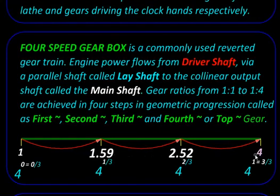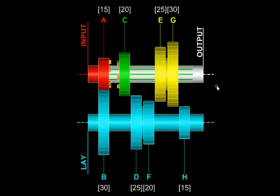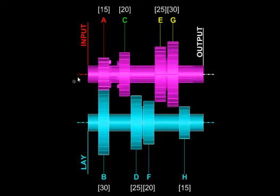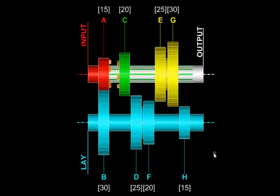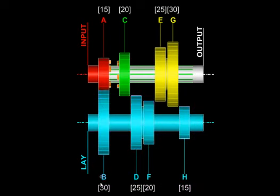Now let us see how to incorporate this geometric progression into a gearbox. To understand the idea behind this design, imagine a step pulley with four steps — say 15, 20, 25, and 30 — and another step pulley with decreasing steps — 30, 25, 20, and 15. If we have a belt between them that can be shifted, we get various speed ratios.